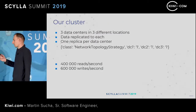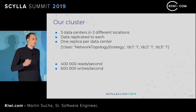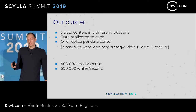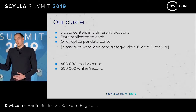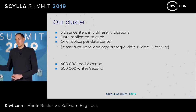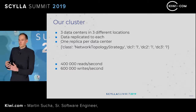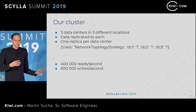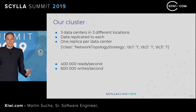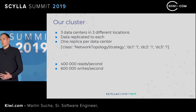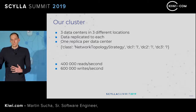Our cluster runs in three data centers at three different locations in Europe. Those locations were chosen so that they are far enough apart that a disaster in one location doesn't affect the others, but close enough so that the latency is not that bad. This means we can use just a single replica per data center, which saves us costs.